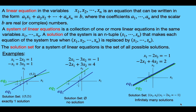To summarize: our first system had exactly one solution, our next system had no solutions, and the third system had infinitely many solutions. In fact, any time we're working with two variables x sub 1 and x sub 2, the system must have either exactly one solution, no solution, or infinitely many solutions.